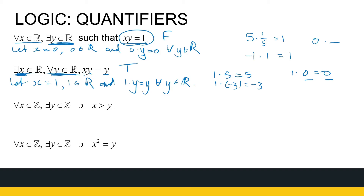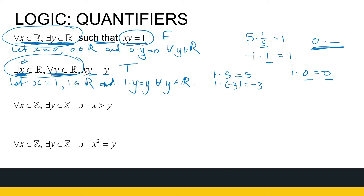Just note the difference — the order of quantifiers matters. If I say 'for all x there exists a y,' it means for every x I can find a y to go with that x. But the second statement says there is one x that works for every y — that's one specific number, the number 1. In the first example, we found different values of y for each x, except for 0. These are not interchangeable.